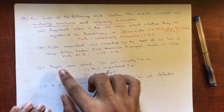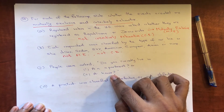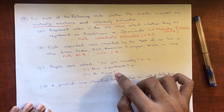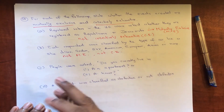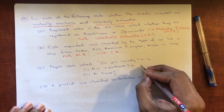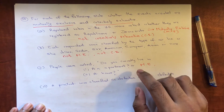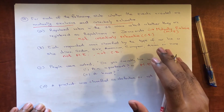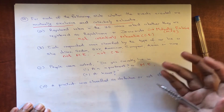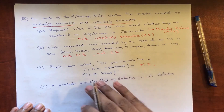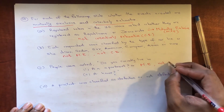For part C — apartment or house — this is mutually exclusive because you cannot live in both simultaneously; you're either in an apartment or a house. It is not collectively exhaustive because some people don't live in either, so it doesn't cover the entire sample space of where people live.